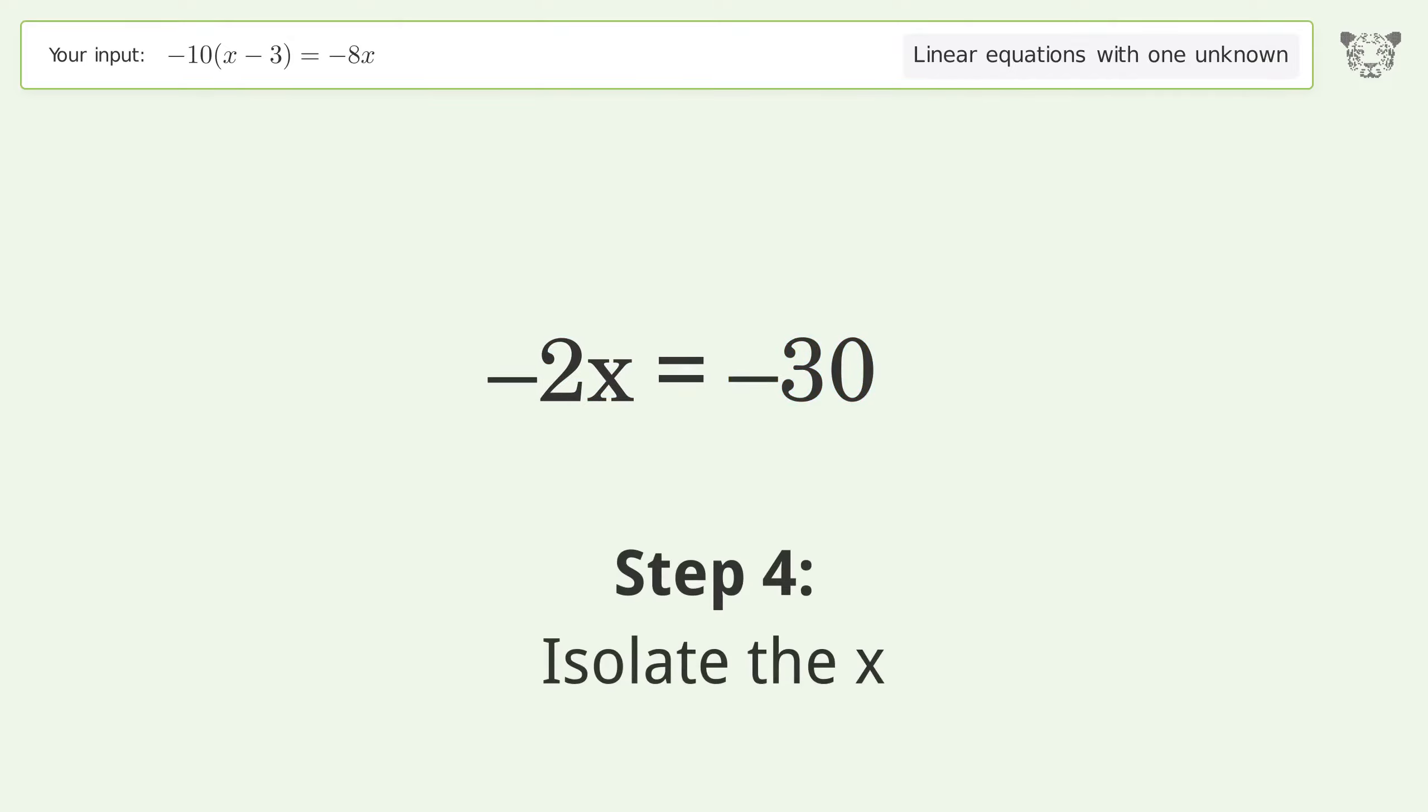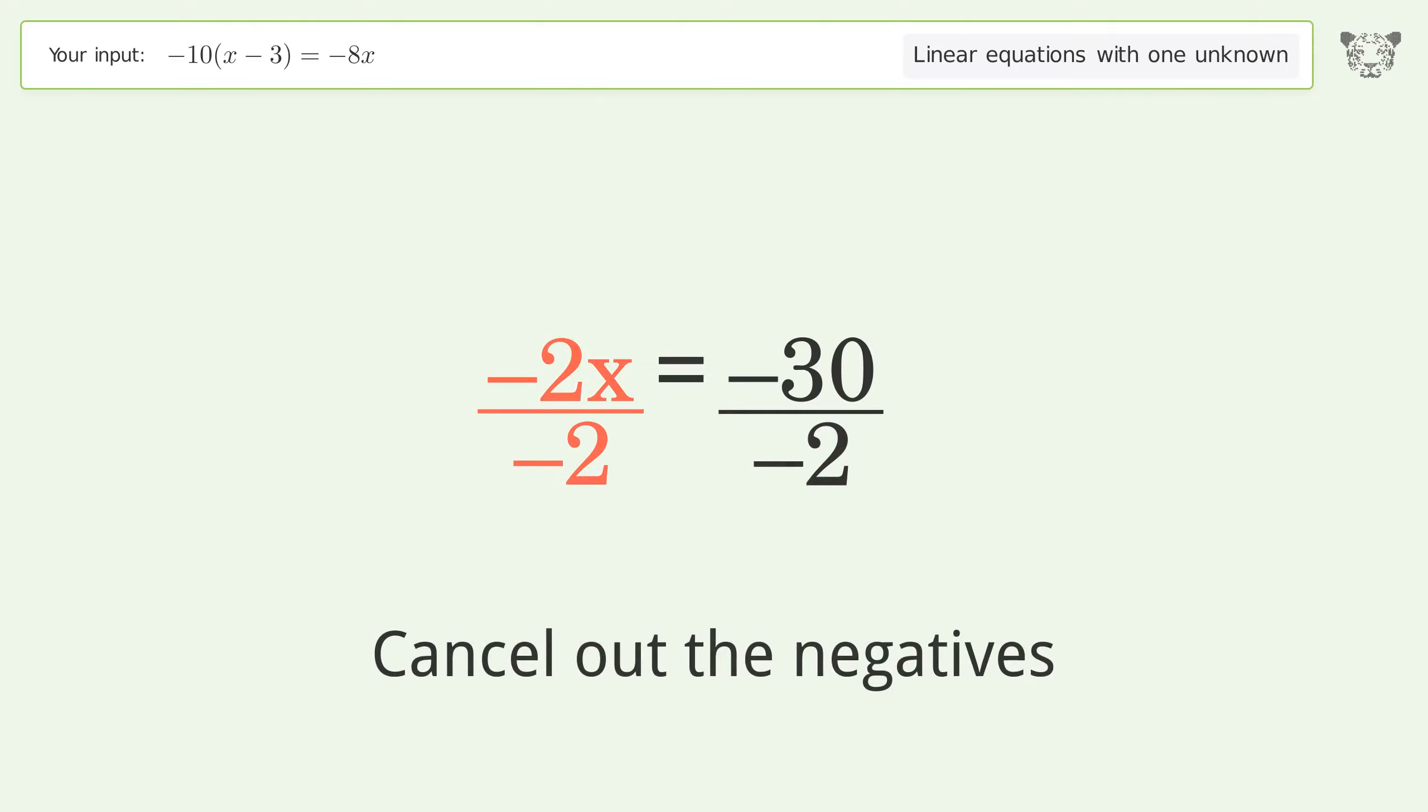Isolate the x by dividing both sides by negative 2. Cancel out the negatives and simplify the fraction.